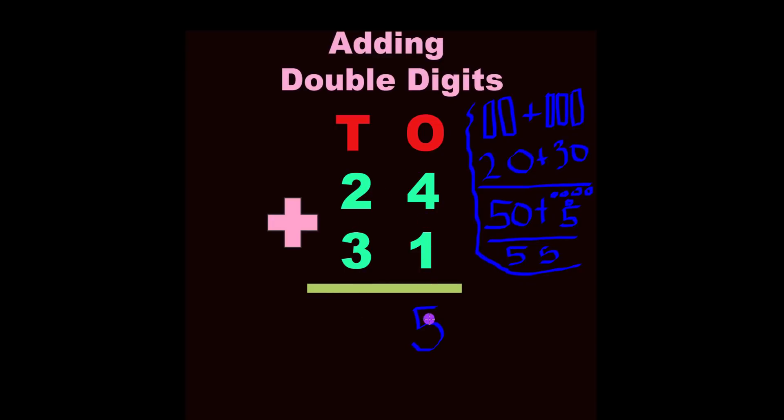Okay, so then we start with the right first. 4 plus 1 equals 5. And then 2 plus 3 equals 5. Oh my gosh, look how easy that was.